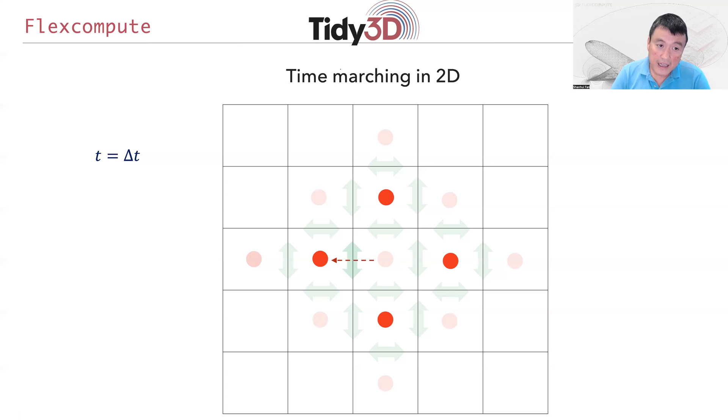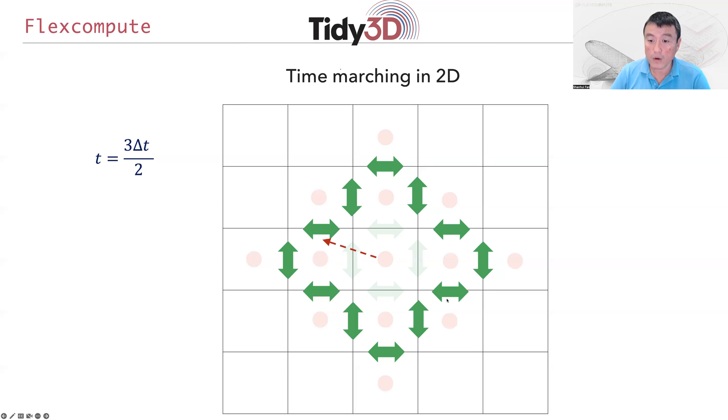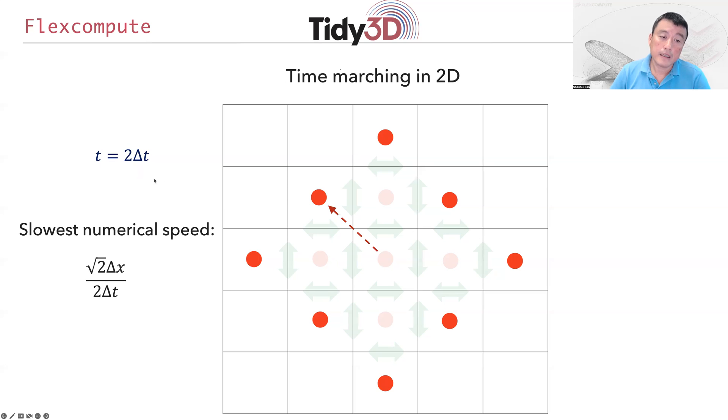You repeat the process. In the next half-time step, these are the magnetic field components that get coupled. Finally, if you propagate over two times Δt, the red dots here correspond to electric field components that now know the information about the electric field at the center of the grid.